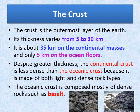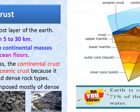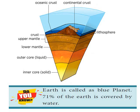We have two types of crust: continental crust and oceanic crust. The continental crust is 35 kilometers thick, whereas the oceanic crust is only 5 kilometers. Despite greater thickness, the continental crust is less dense than the oceanic crust because it is made up of both light and dense rock types. The oceanic crust is composed mostly of dense rock such as basalt. You can see the picture of basalt there. You can see the crust comprised of oceanic crust and continental crust, and then you can find the upper and lower mantle, outer core which is liquid and inner core which is solid.